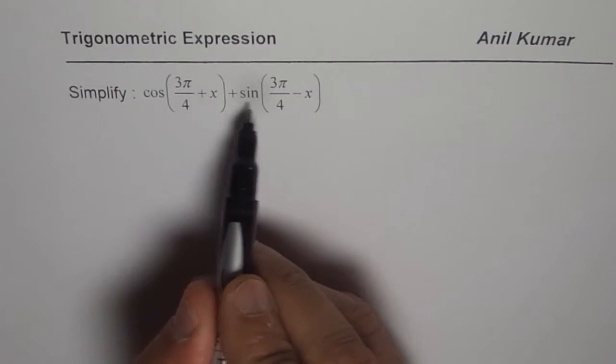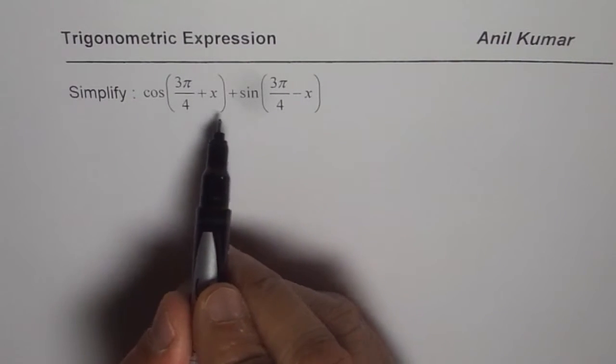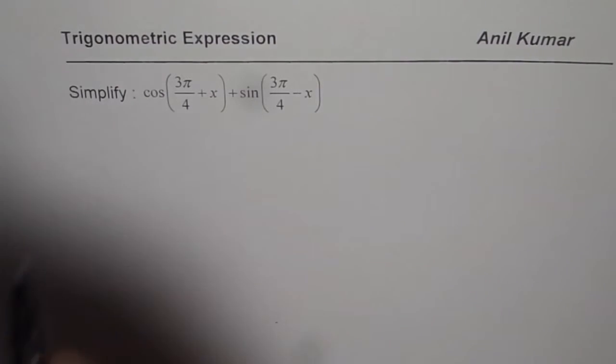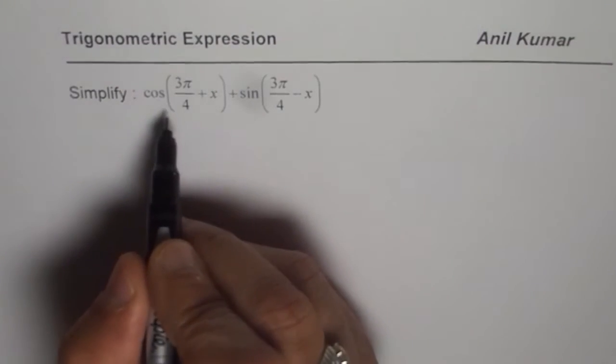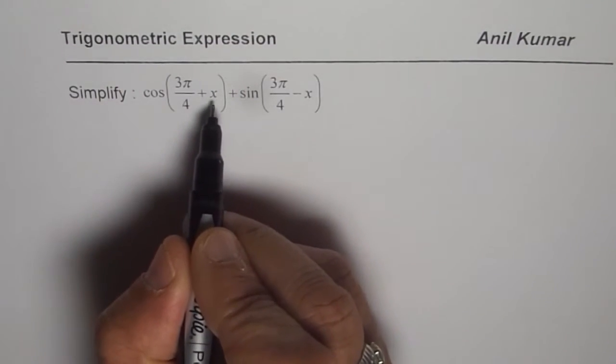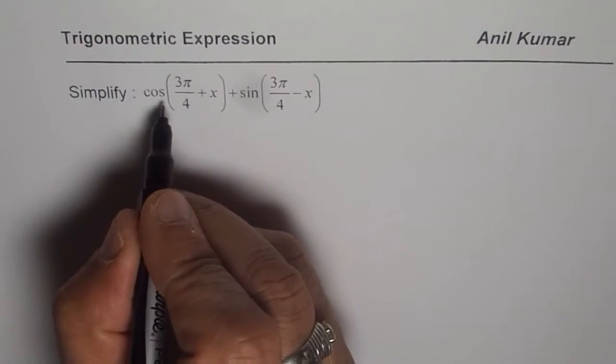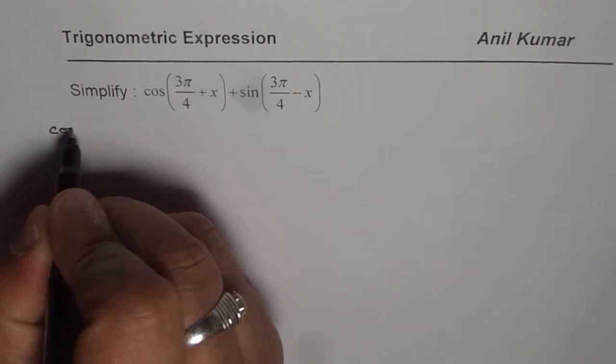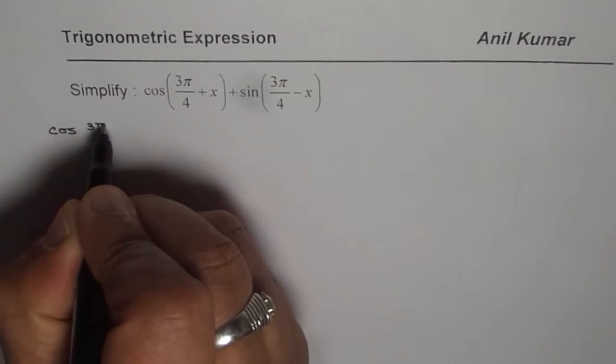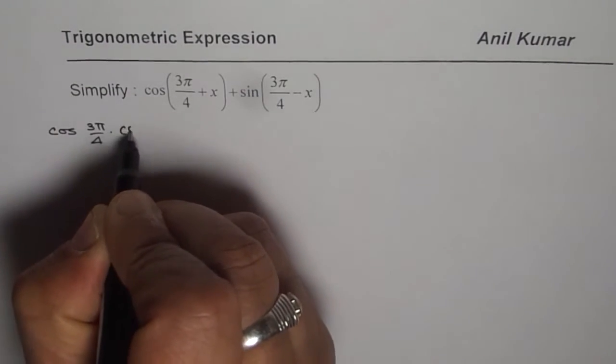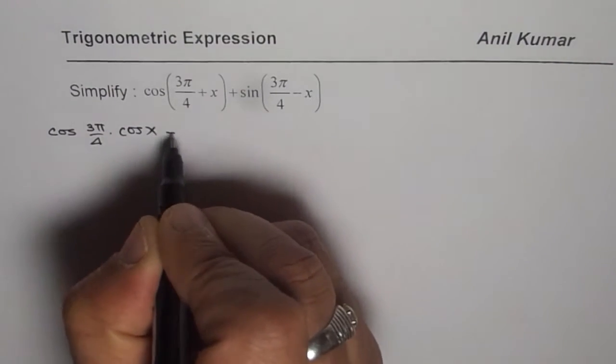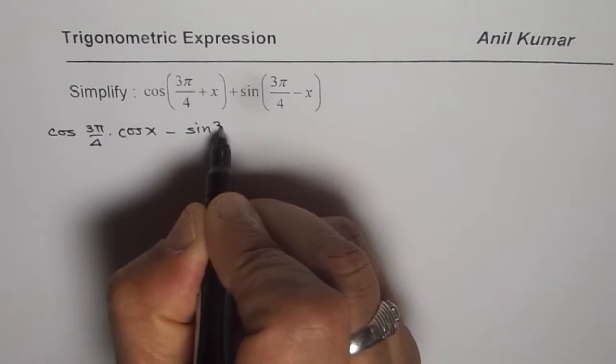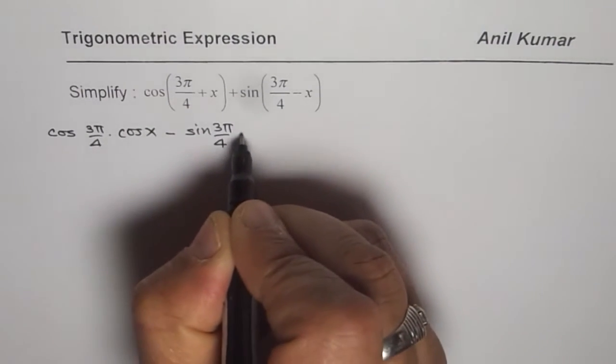We will use cos(a+b) and sin(a-b) formulas to expand and simplify. Now what is cos(a+b)? It is cos(a)cos(b) - sin(a)sin(b). So let us expand. We get cos(3π/4)cos(x) minus sin(3π/4)sin(x).